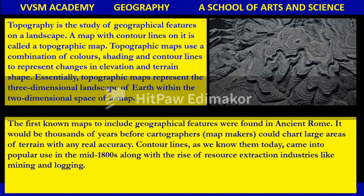Topography. What is topography? Topography is the study of geographical features on a landscape. The surface of the earth is nothing but a landscape. A map with contour lines on it is called a topographic map. A topographic map uses a combination of colors, shading, and contour lines to represent changes in elevation and terrain shape.